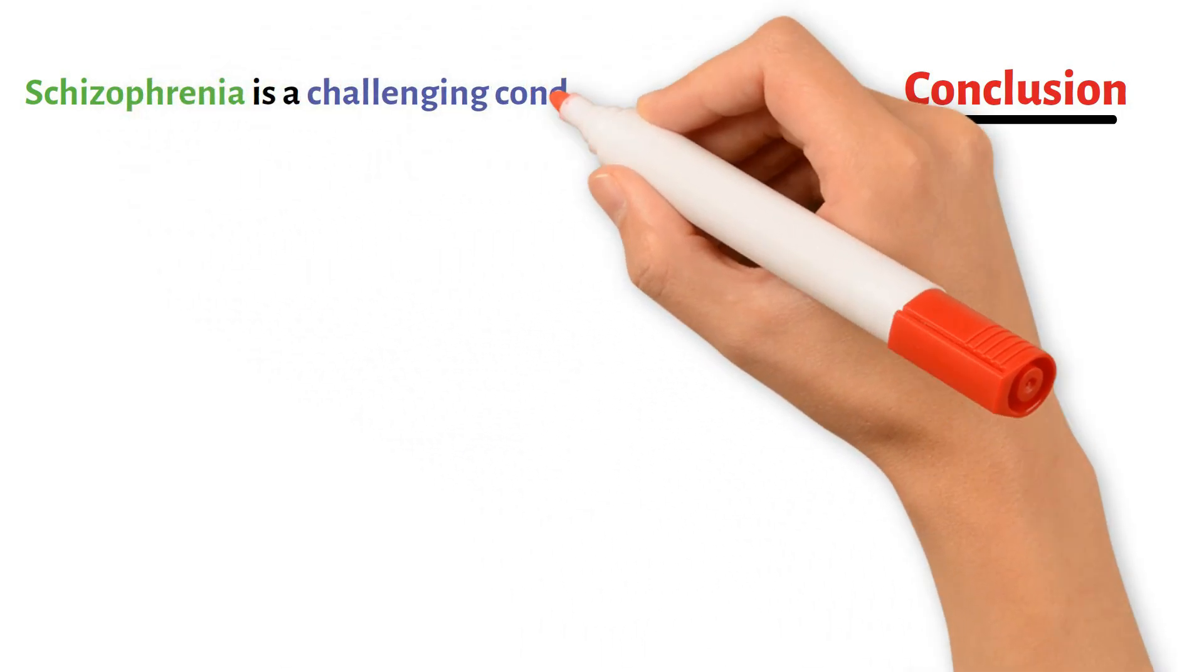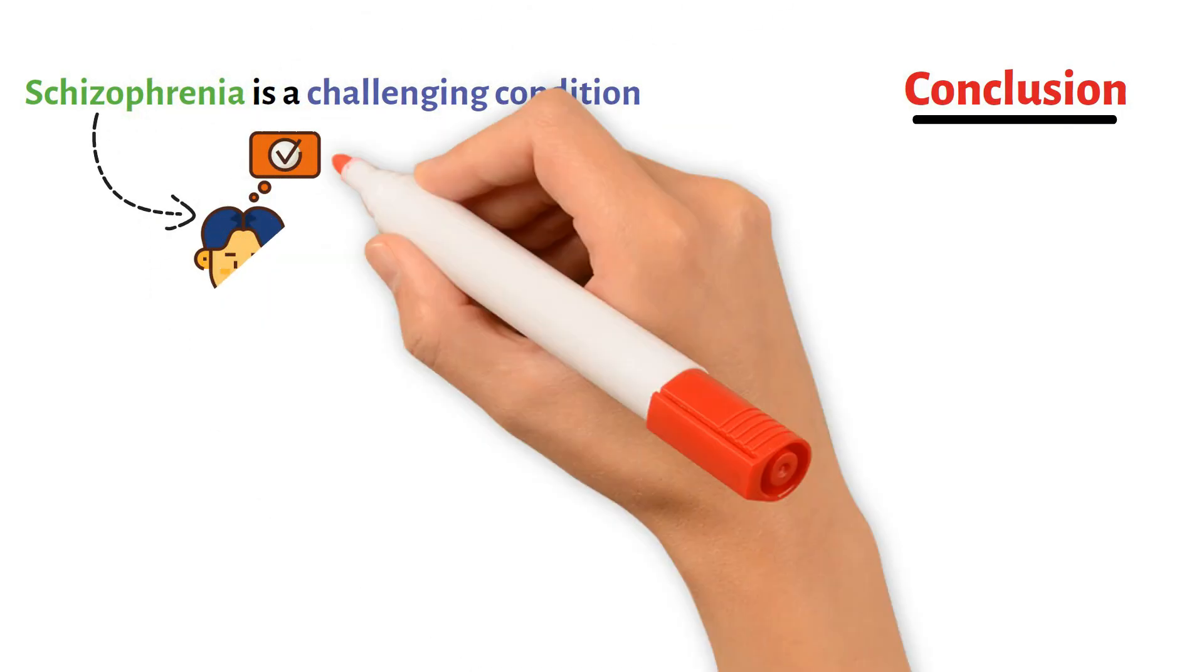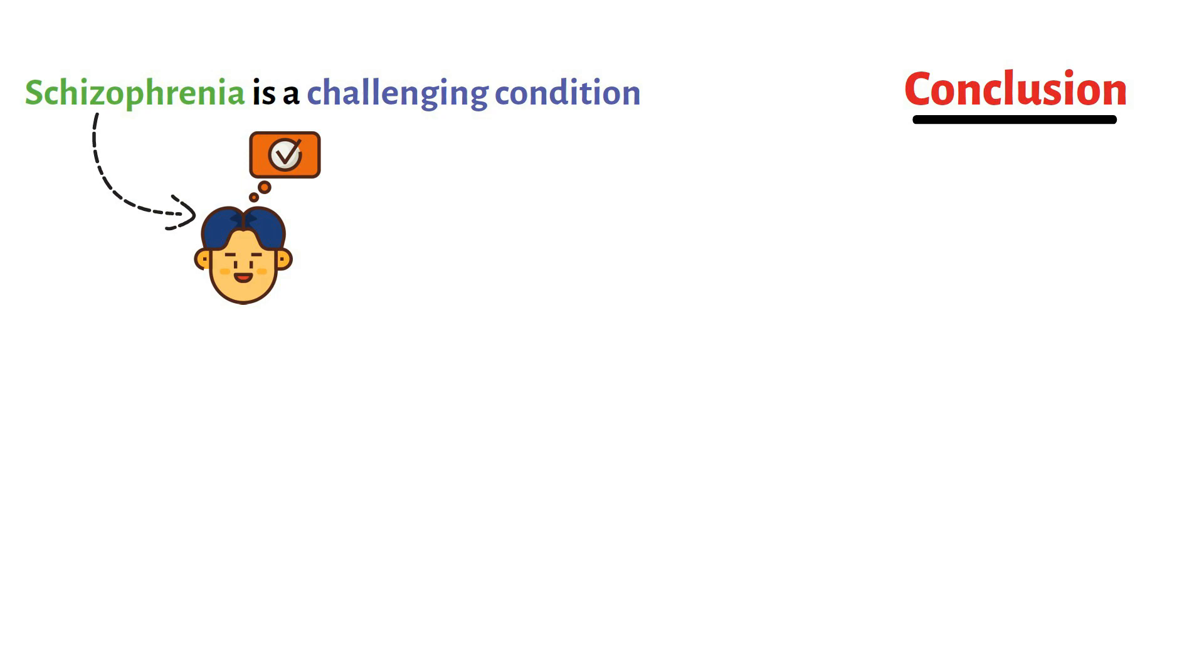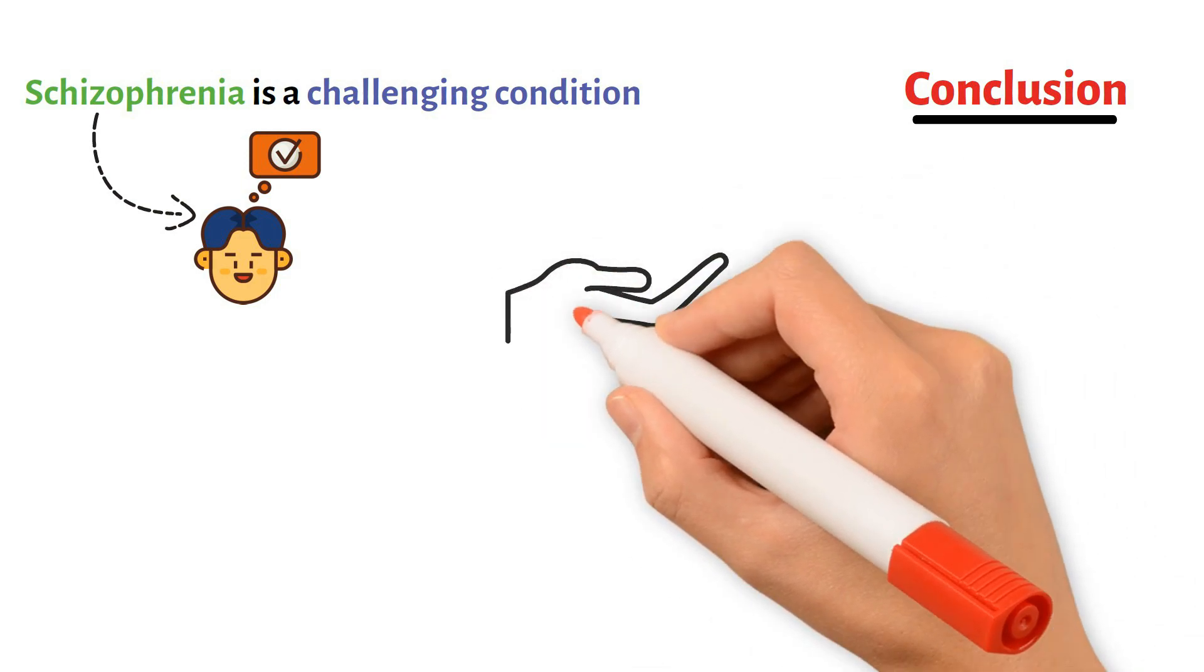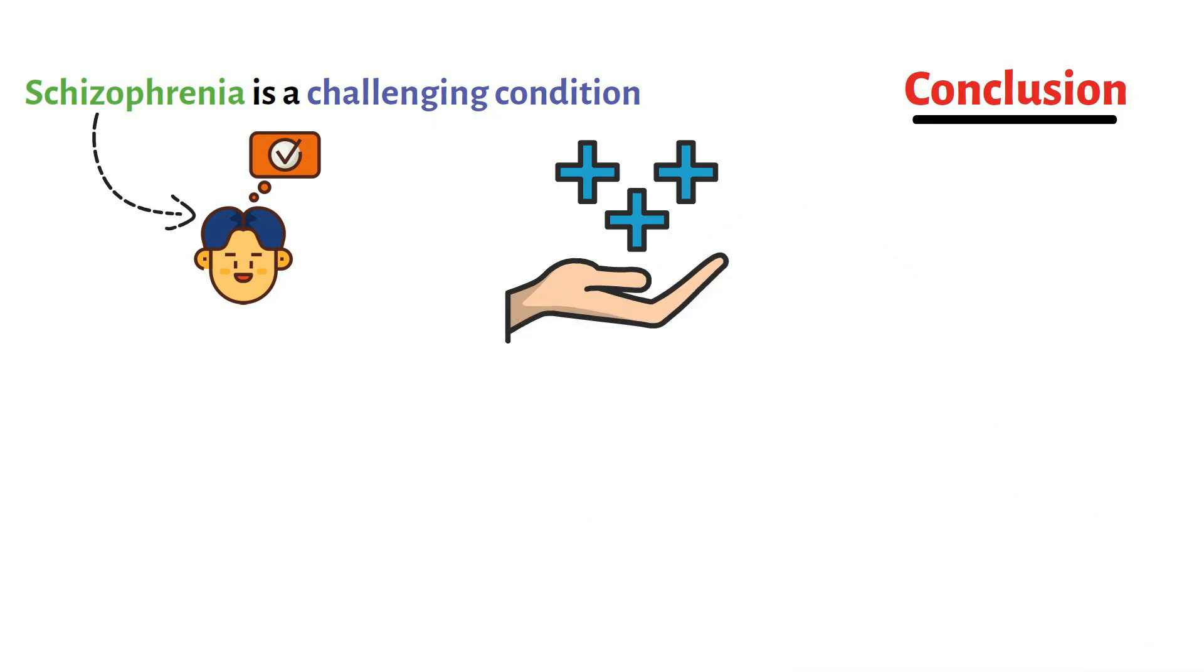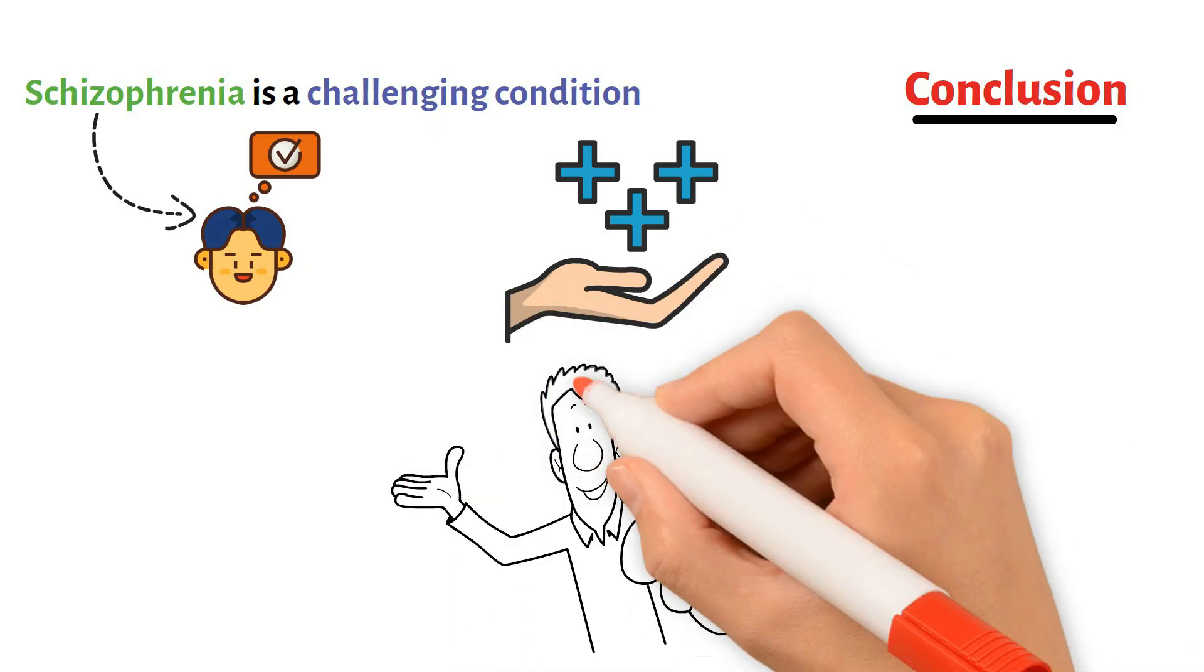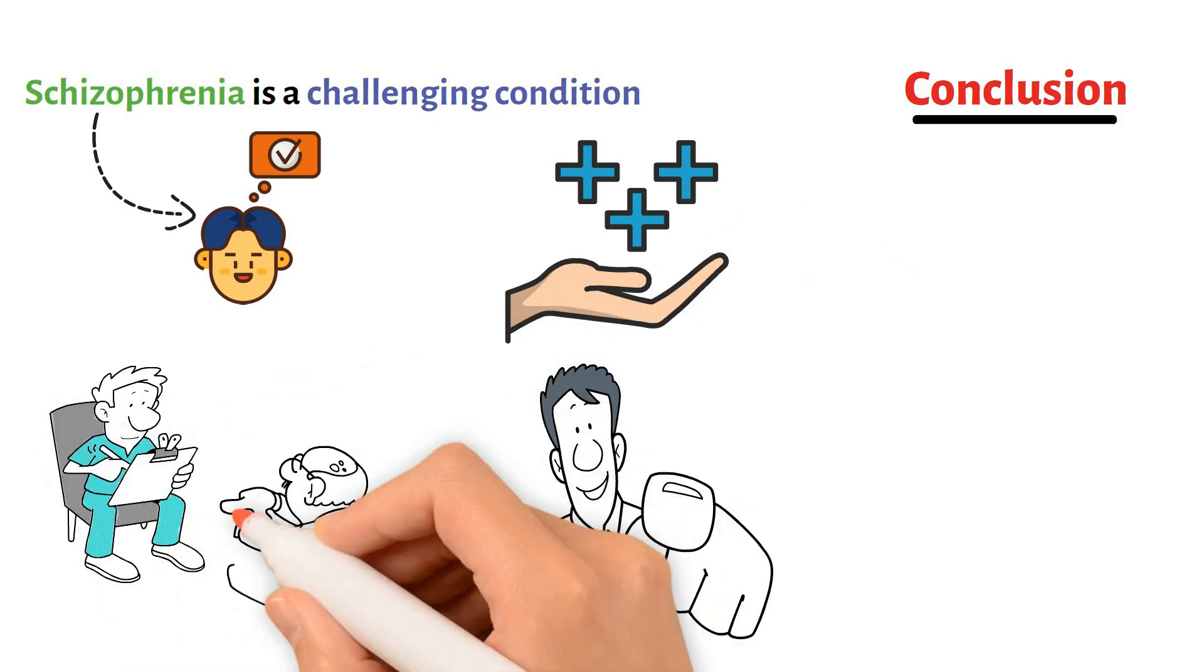Schizophrenia is a challenging condition, but understanding more about it can help reduce the stigma and support those affected. Remember, it's okay to seek help, and it's important to support each other. If you or someone you know is struggling, we encourage talking to a health professional.